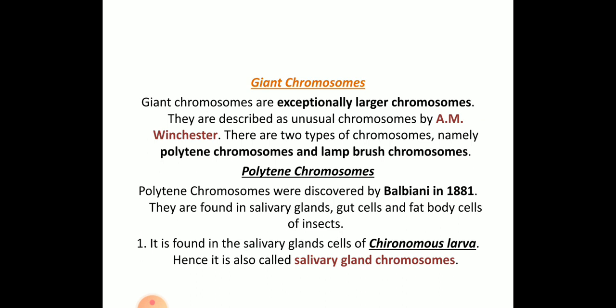The polytene chromosomes were discovered by Balbiani in 1881. He found them in the salivary glands, gut cells, and fat body cells of insects. Because they were found in salivary glands, they are also called salivary gland chromosomes.